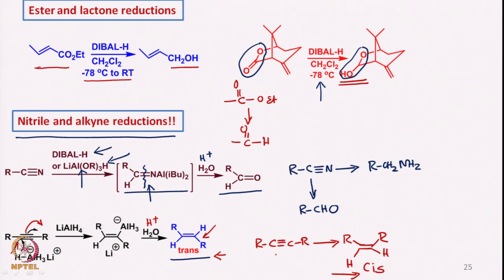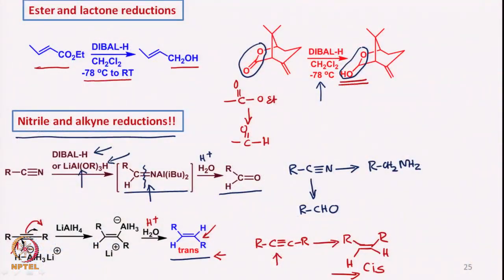We can also use hydrogenation conditions with Rosenmund reduction using a poisoned catalyst for cis selectivity. The remaining part — converting acetylenes to the corresponding cis olefin with diisobutyl aluminum hydride and other reductions and transformations — will be taken up in the next class. Till then, study the reductions and we will continue next time. Thank you and goodbye.